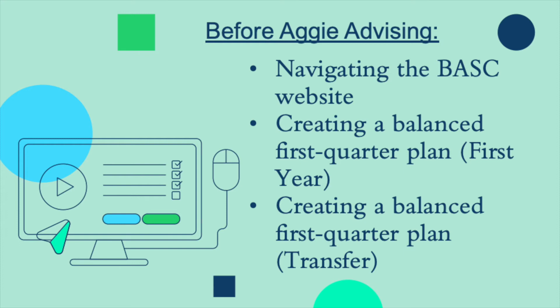'Creating a Balanced First Quarter Plan' for transfer students: you'll learn about which major courses to select during your first quarter, a brief explanation about prerequisites, AP/IB credit, and sample plans are also included, as well as how transfer courses affect these.